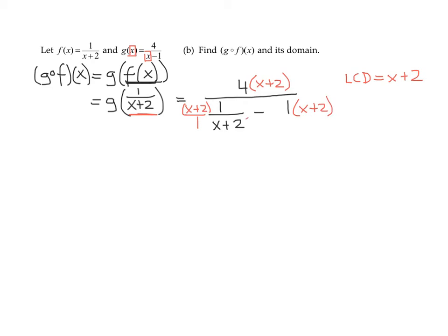And the reason we do that is this reduces. And what do I get? My numerator is 4 times the quantity x plus 2, all divided by 1 minus the quantity x plus 2. So all I have to do is simplify this.